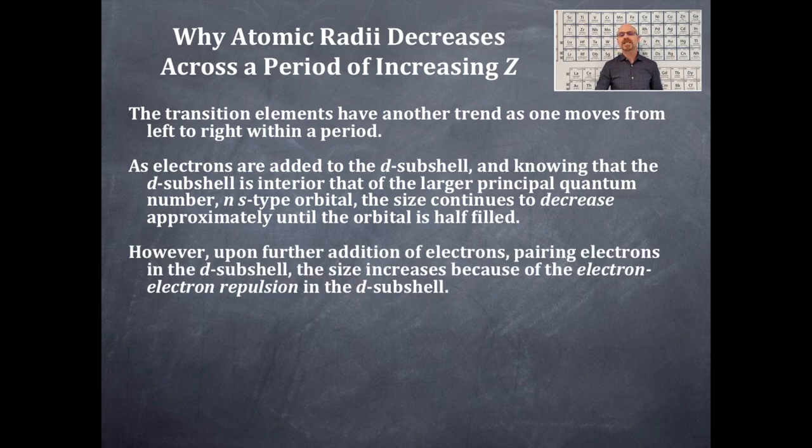However, upon further addition of electrons, pairing electrons in the d-subshell, the size increases because of electron-electron repulsion. This makes sense because you're placing a paired electron where you already had an electron in an orbital, causing electron-electron repulsion and increasing the size.